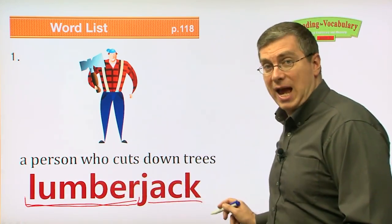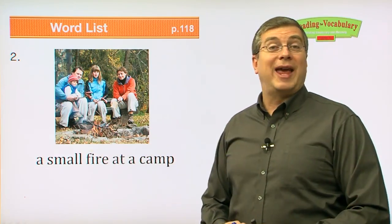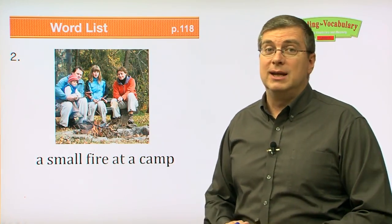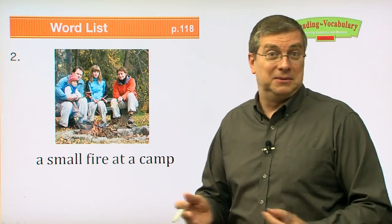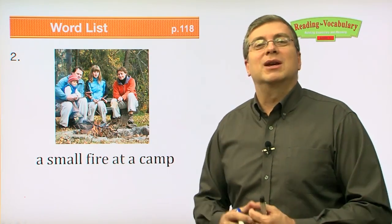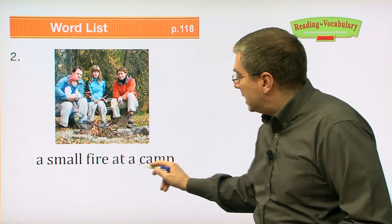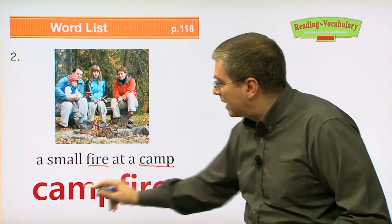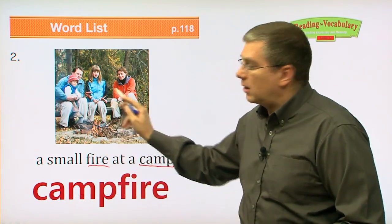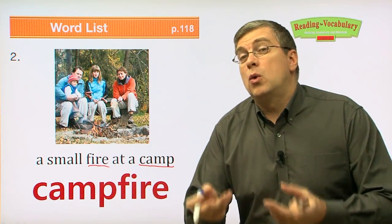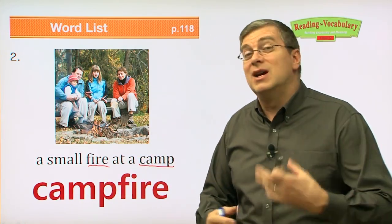Next one: a small fire at a camp. Do you ever go camping with your friends or your family? Sometimes your family takes you to Sorak-san or Chiri-san — there are many mountains in Korea. At night, the family will sit around this — it's a small fire at a camp. It's actually a campfire. We use these two words together and it's called campfire. You build a little fire at your camp, and many people will tell stories around the campfire.